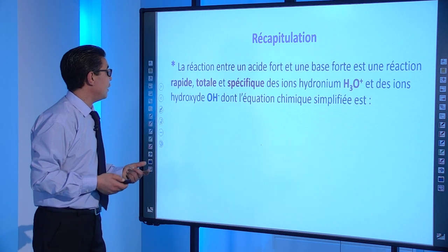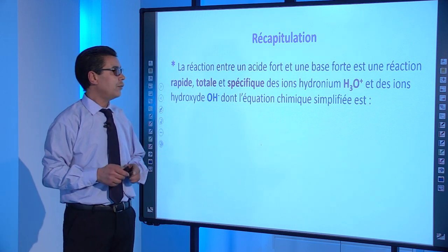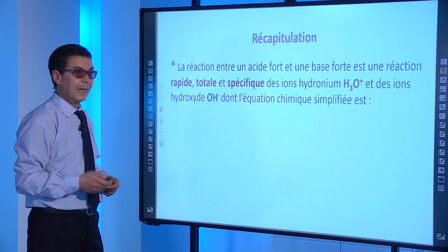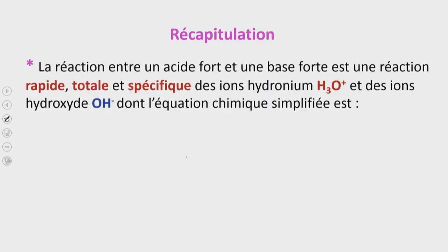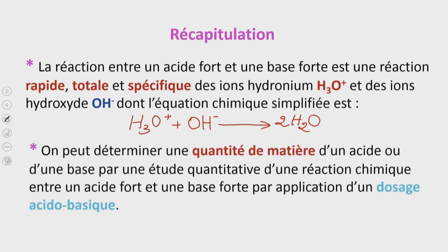Récapitulons : la réaction entre un acide fort et une base forte est une réaction rapide, totale et spécifique des ions hydronium H₃O⁺ et des ions hydroxyde OH⁻, dont l'équation chimique simplifiée est H₃O⁺ + OH⁻ → 2H₂O. On a vu aussi qu'on peut déterminer une quantité de matière d'un acide ou d'une base par une étude quantitative d'une réaction chimique entre un acide fort et une base forte, par application d'un dosage acido-basique.